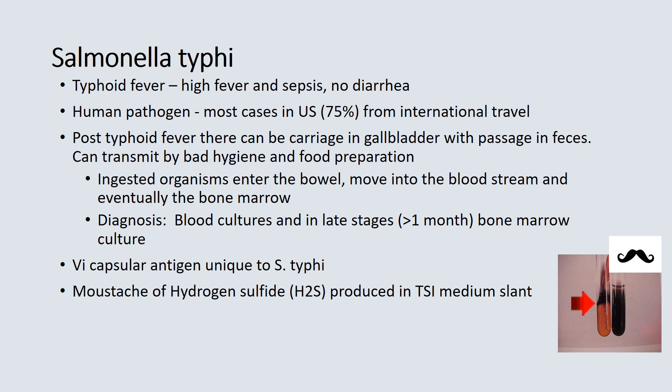Salmonella typhi is a little different from regular Salmonella species. It produces typhoid fever — a high fever and sepsis with no diarrhea. It is a human pathogen, and most US cases are from foreign international travel. Even with proper antimicrobial therapy, you can develop a post-typhoid carrier state with carriage in the gallbladder and passage in the feces, which can then be transmitted through poor hygiene and food preparation. If ingested, the organisms can enter the bowel, move into the bloodstream, and eventually the bone marrow.